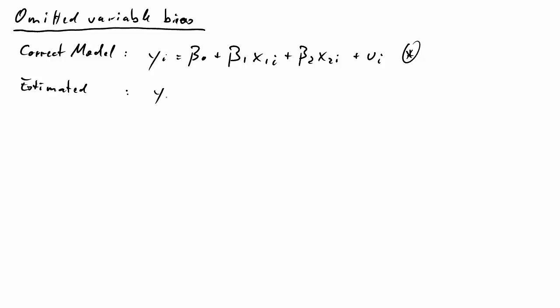However, someone naively thinks, I'm really only interested in the effect of x1, so in the value of coefficient beta 1, let's only estimate this model y as a function of x1. We get a new error term which combines the effect of the old error term u and the omitted variable x2. So this is our estimated model.